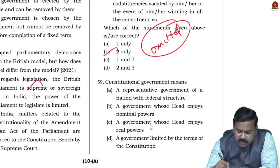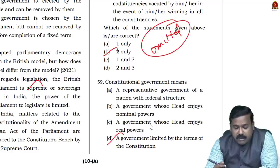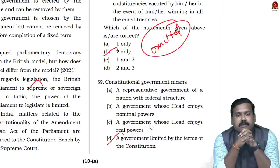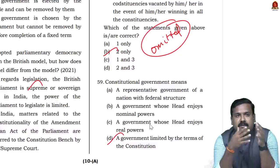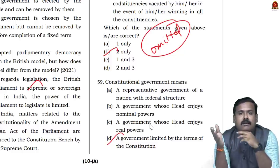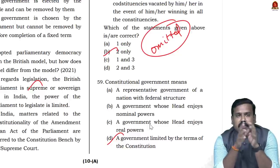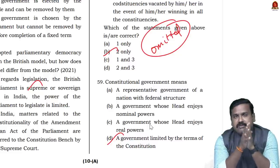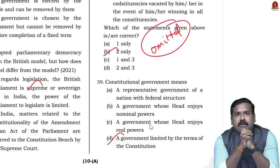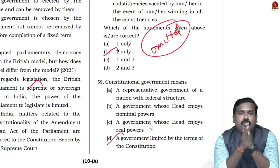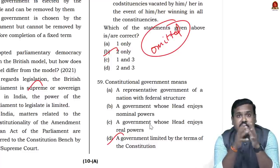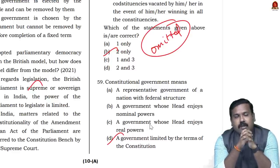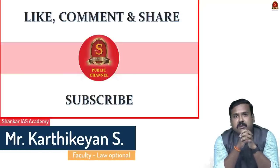Question 59: A constitutional government means a government limited by the terms of the constitution — a repeated, straightforward question. Key takeaways from this paper: most questions are taken from NCERT — 9th, 10th, and 11th standards — or from Lakshmikant or NIOS. Some questions relate to current affairs such as right to privacy. Try to apply logic. For unfamiliar questions, don't guess wildly. If you cannot solve by elimination and are not sure of the answer, avoid taking chances. We'll discuss the remaining questions and give more inputs in other sessions. Please follow our channel for more such discussions. Thank you.